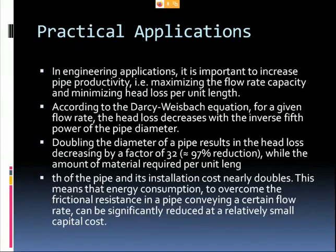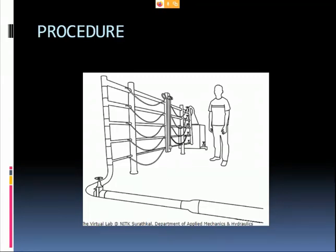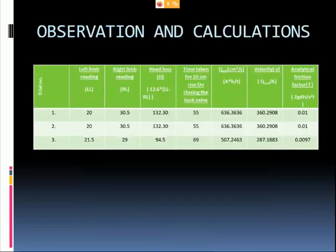Doubling the diameter of a pipe results in the head loss decreasing by a factor of 32. In the procedure, a pipe of the required diameter is selected, all other pipes are closed, and the main inlet valve is opened to allow water to flow through the selected pipe. The manometer valve is changed from isolate position to the air-vent position to remove air inside the pipe, then switched to the read position once steady flow is reached. The exit valve of the collecting tank is then opened to allow continuous flow.